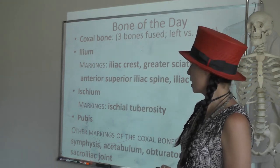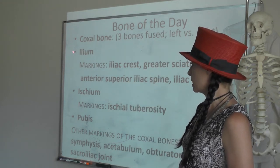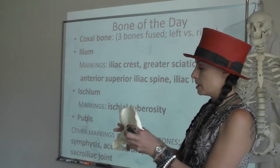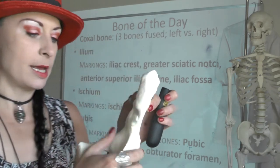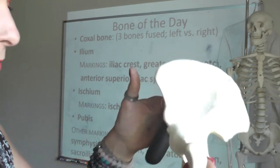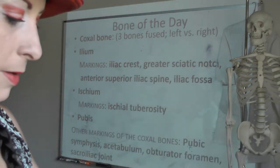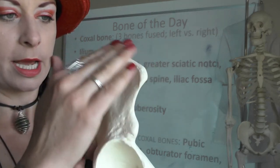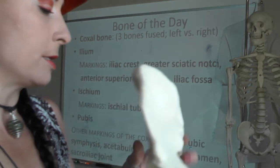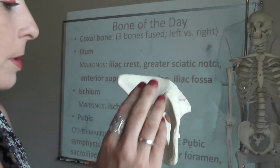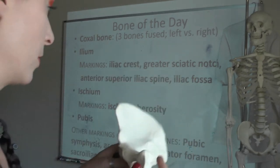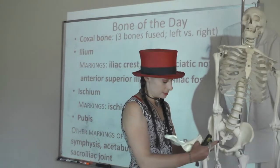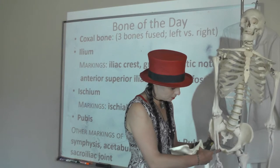The three bones that form the oscoxa or the coxal bone are the ilium, the ischium, and the pubis. The ilium is the big bone here — what you feel as your hip bone in the front is your iliac crest. Your pubis bone is the little pointy bone in the front, and the pubic symphysis is between the pubis bones.